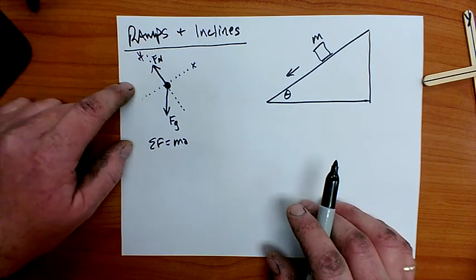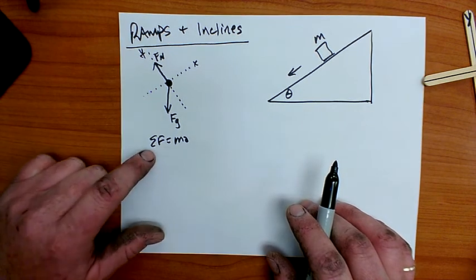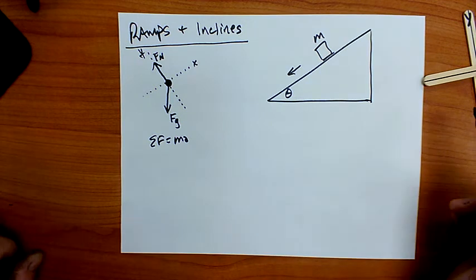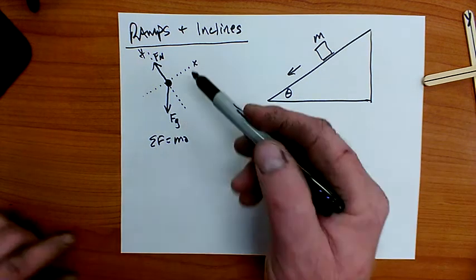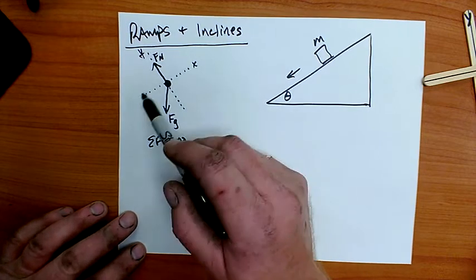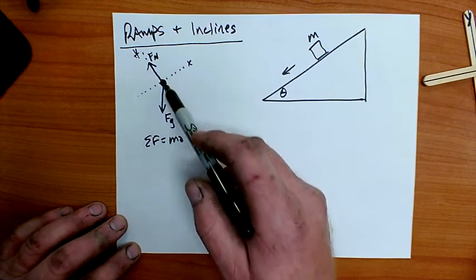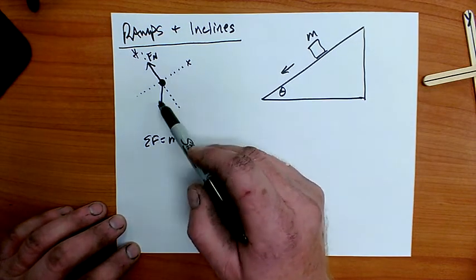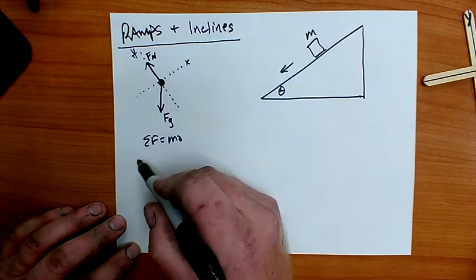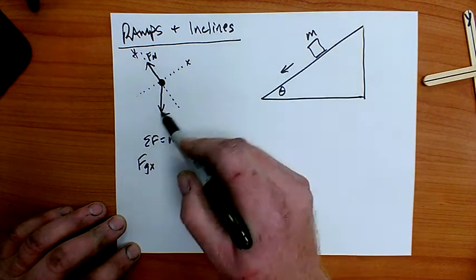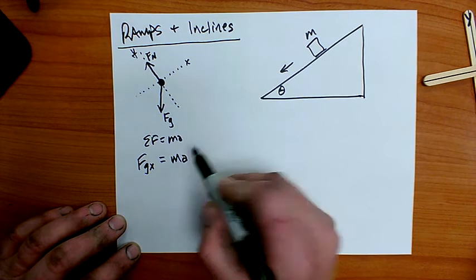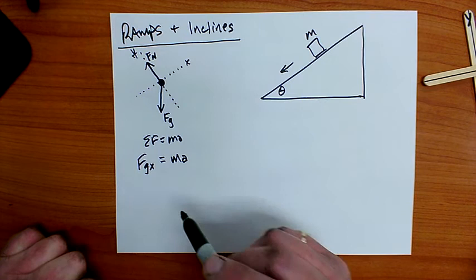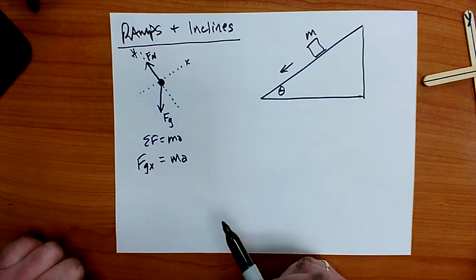Step one is the force diagram including rotating the axes so it lines up with the acceleration. Step two, the basic equation net force equals ma. Step three, I look at the direction it accelerates and identify the forces that make up this net force. It's accelerating in the x direction, so I'm only looking at x direction forces. There's a component of gravity in the x direction — I'll call that fgx — and that equals mass times acceleration.